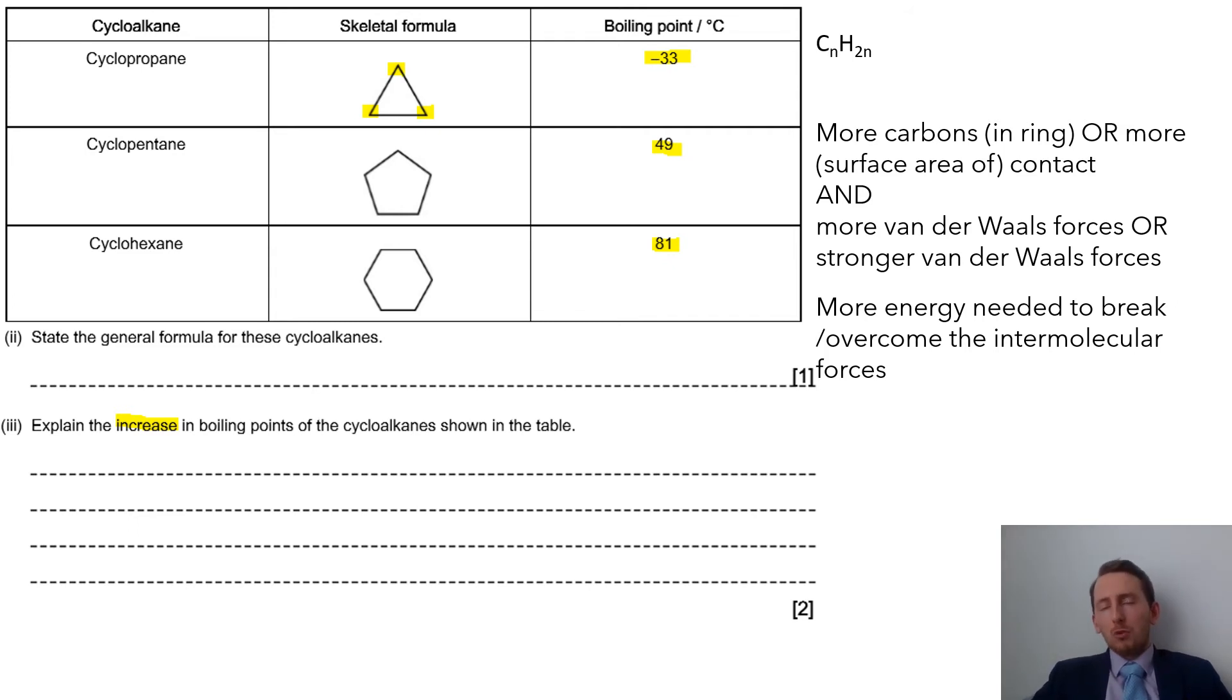Just make sure we mention both points: more carbons, more points of contact, more van der Waals forces. Van der Waals is old terminology - I tend to say London forces. We've got more of those therefore more to overcome, so we get a higher boiling point. Two marks for those two points.